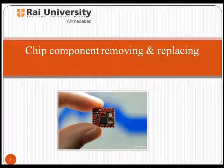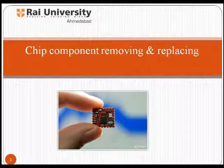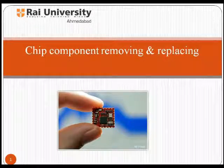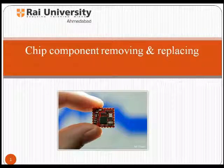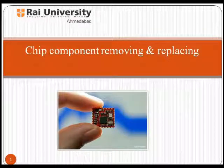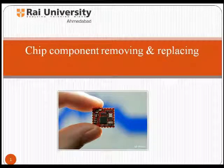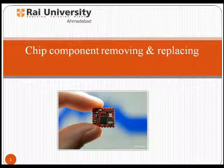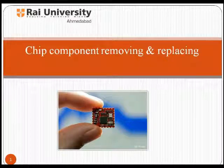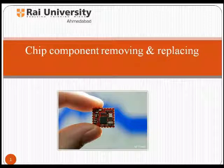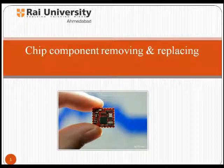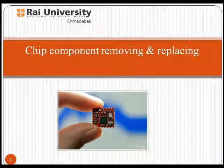Chip component removing and replacing. All mobile phones have a number of features and additional functions to make them more attractive to consumers. These features correspond to a component part which has been installed in a mobile phone circuit board. While repairing a mobile phone, where the fault has occurred is firstly tested and after confirming the fault, it is removed and replaced if required.